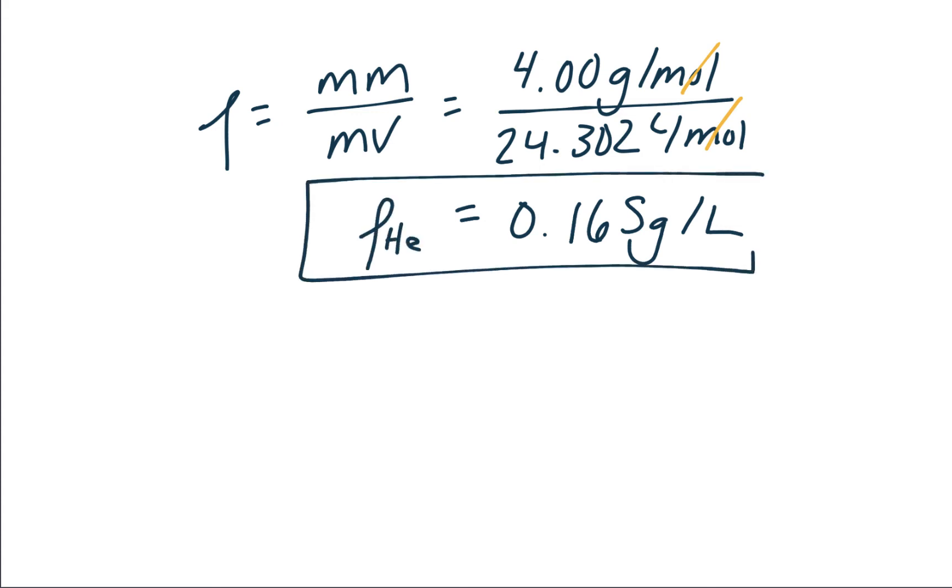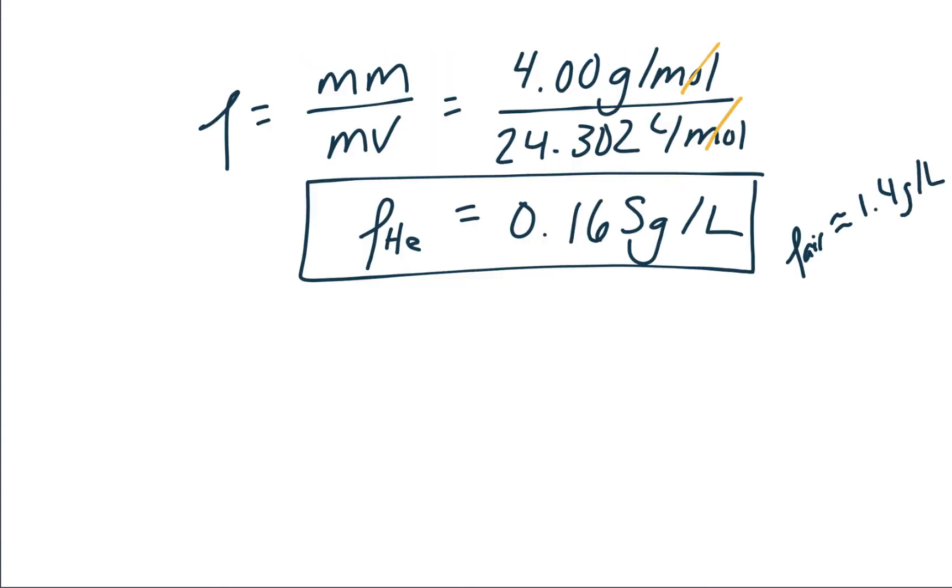First, we ask if that makes sense. So for some context, the density of air under similar conditions is roughly 1.4 grams per liter. We know helium will float in the air, meaning it's less dense than the air, so our answer makes sense.